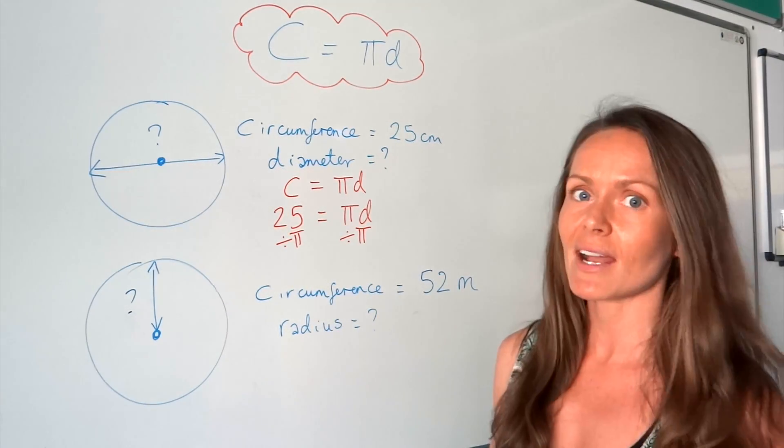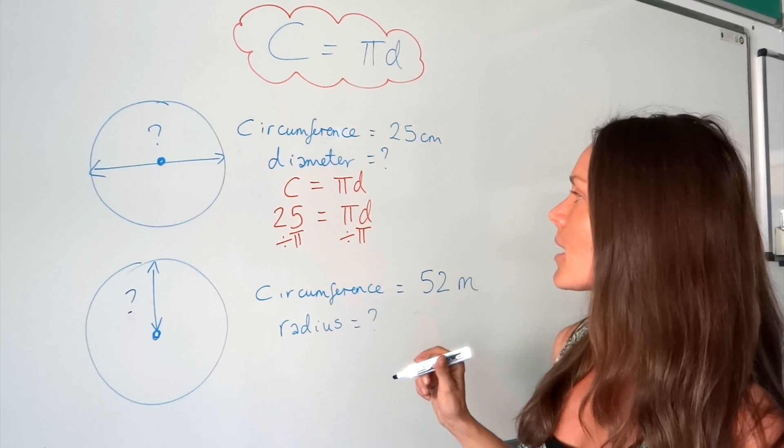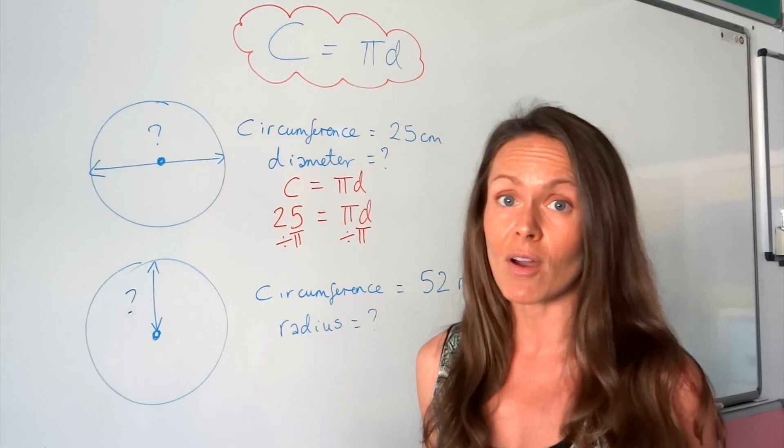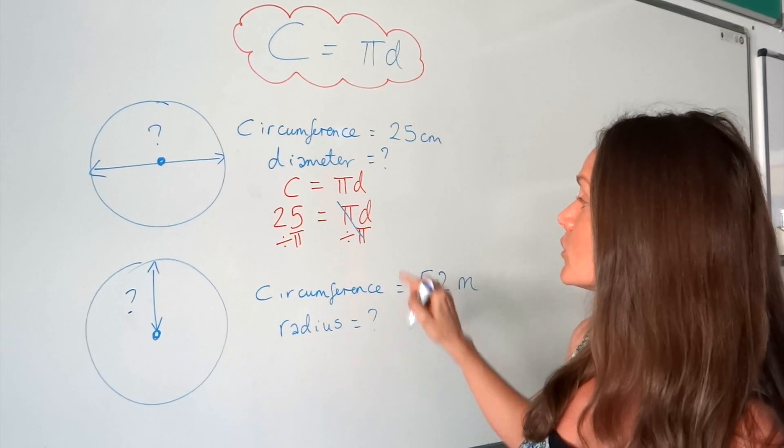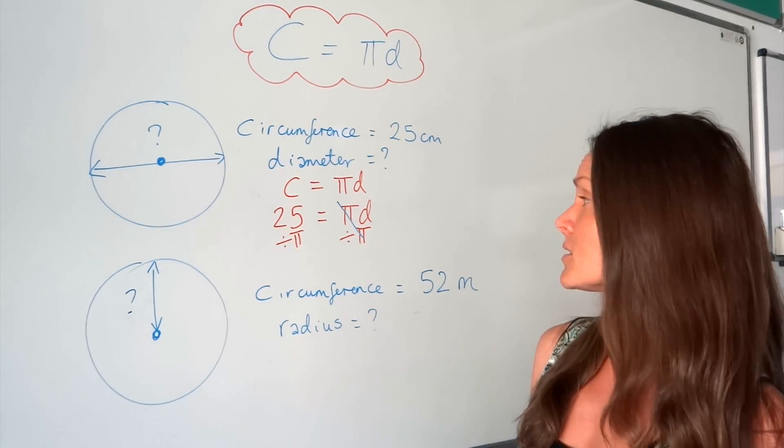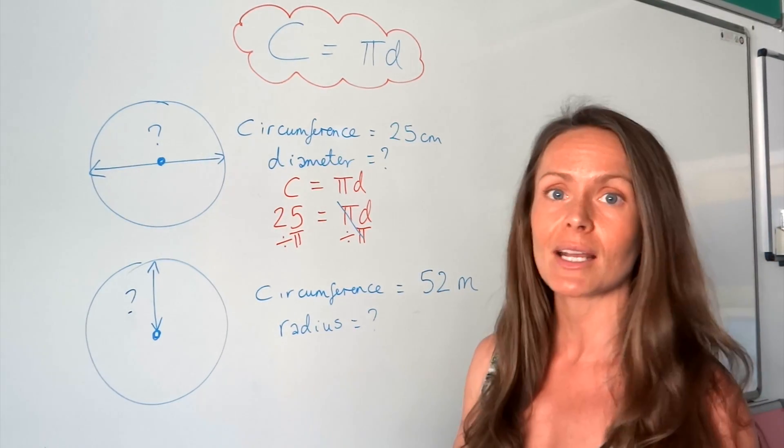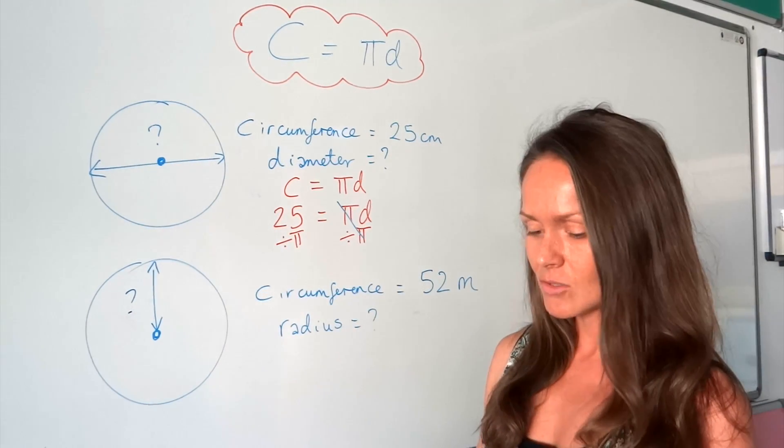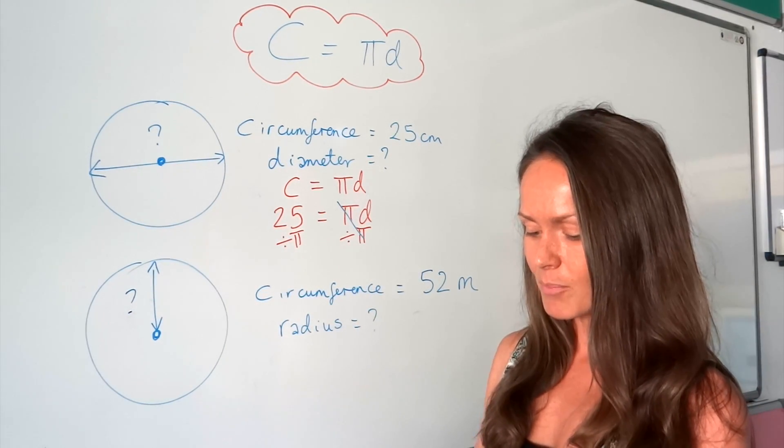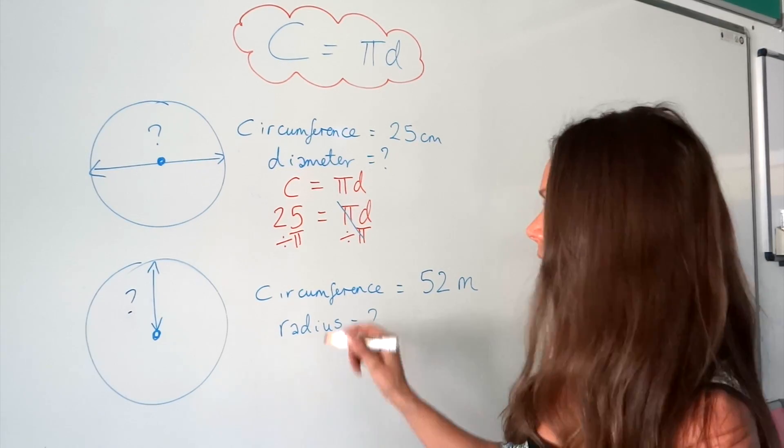On the right hand side, when I do π divided by π, when you divide something by itself you get 1. So π divided by π leaves you with 1d. On the left hand side all that's left is to calculate. Put that in the calculator and do 25 divided by π.